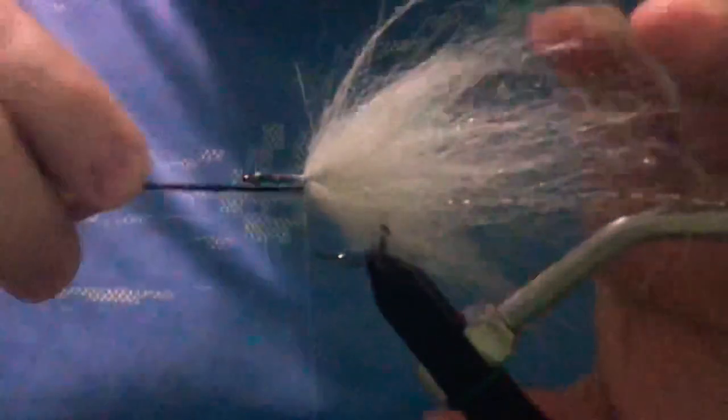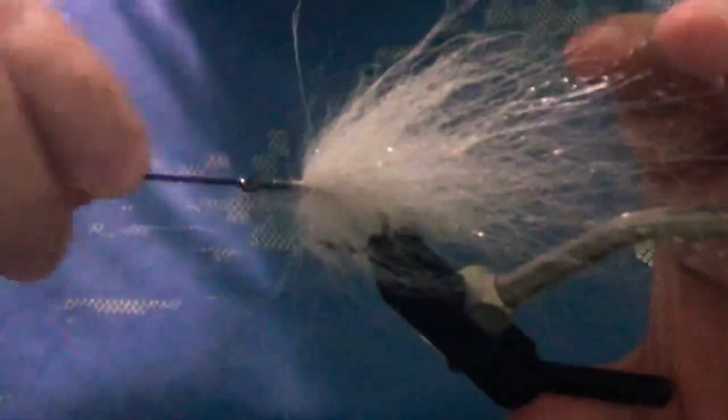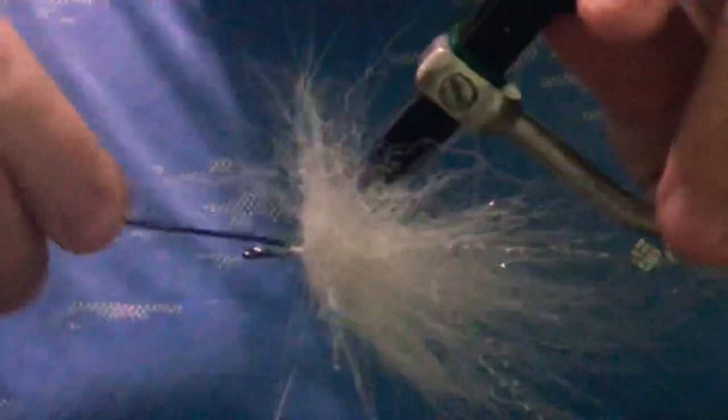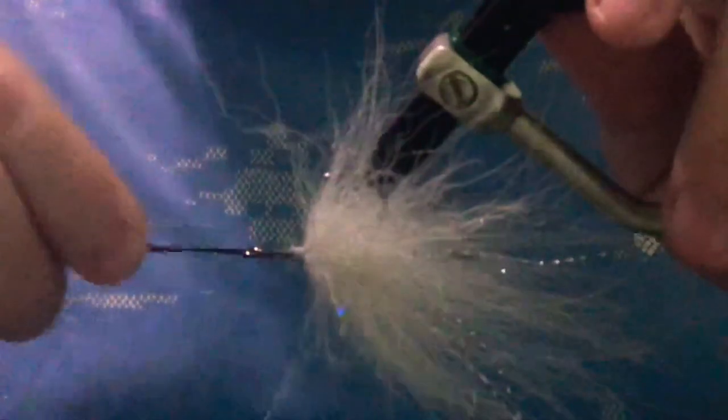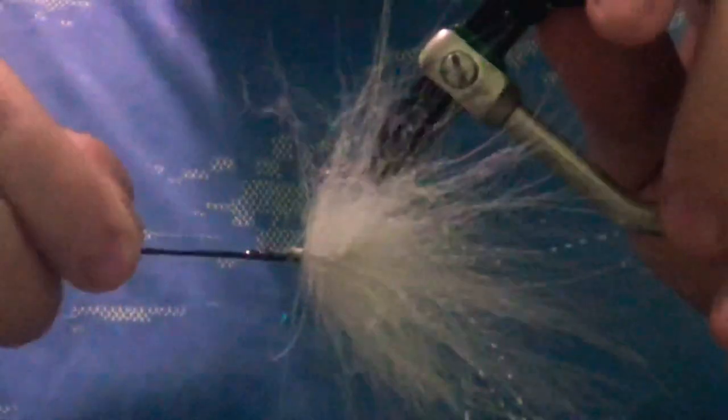Then we're just going to take our Bakken again and just go ahead and kind of pick out all the fibers that got trapped. Just do your best to pick out as many as you can. You're probably not going to get them all, but you get the majority of them.